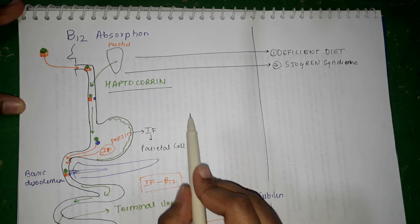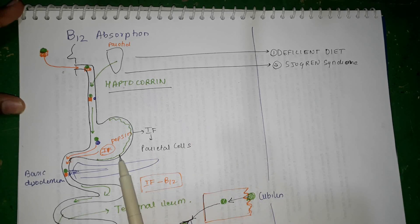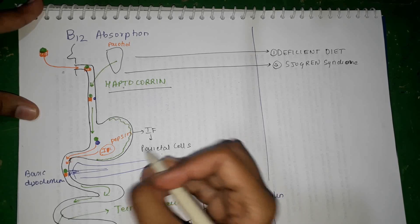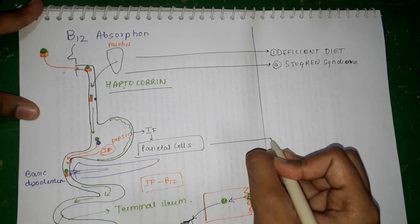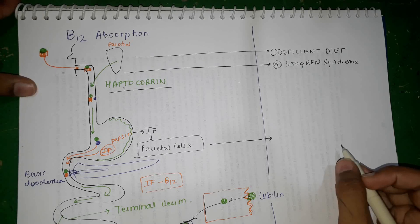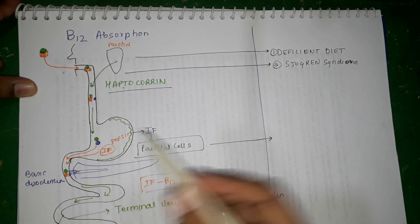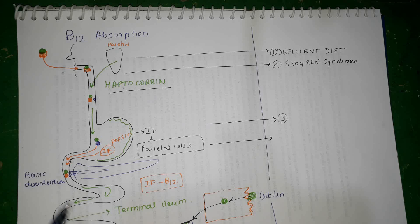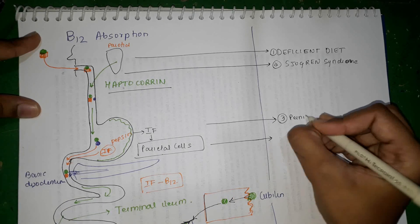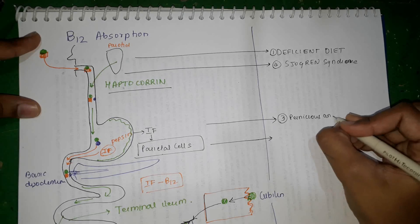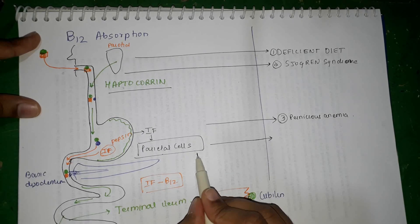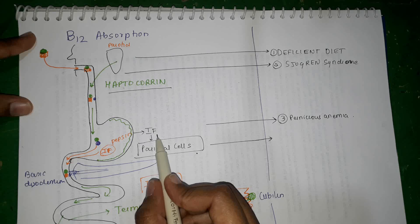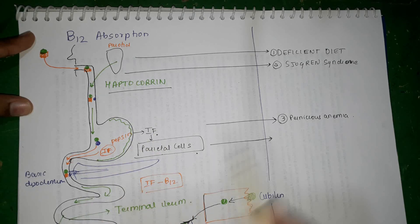Coming downward towards the stomach, there are two things happening in the stomach for B12 absorption. One is intrinsic factor binding. There are two possibilities: either there are no parietal cells to produce intrinsic factor, or there is no stomach at all. The first is a disease where parietal cells are selectively destroyed — that is pernicious anemia. In pernicious anemia, autoantibodies are produced against the parietal cells, and because of their large-scale destruction, intrinsic factor is not secreted, resulting in no absorption of vitamin B12.